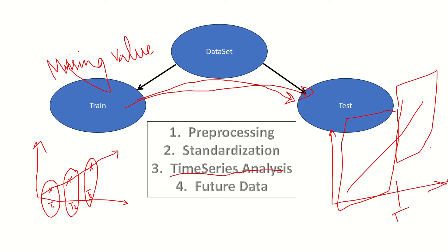We have to use unseen data, but the model doesn't perform well on it. This is the concept of data leakage — we perform well on train data and test data, we deploy the model, but the model cannot perform on other real data. The information from training leaks into the test, we check accuracy, get good results, and believe it is a good model — but that's the data leakage problem.